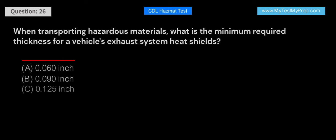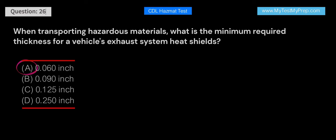When transporting hazardous materials, what is the minimum required thickness for a vehicle's exhaust system heat shields? A. 0.060 inch. B. 0.090 inch. C. 0.125 inch. D. 0.250 inch. Answer: A. The minimum required thickness for a vehicle's exhaust system heat shields when transporting hazardous materials is 0.060 inch. This thickness helps to prevent heat transfer to nearby hazardous materials and reduces the risk of accidents.